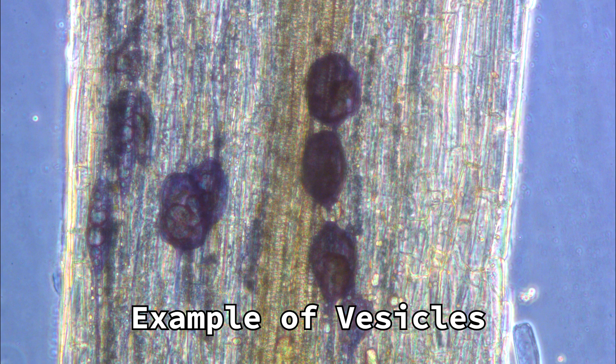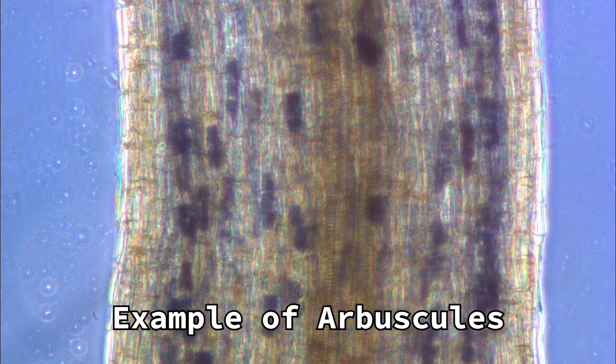Vesicles are one such structure, which are ovular storage sacs. Arbuscules are the branching organs that fill the root cells and are the site of nutrient exchange between the fungi and the host plant.